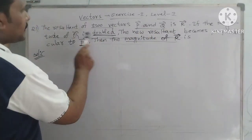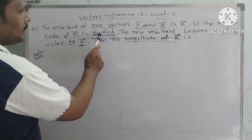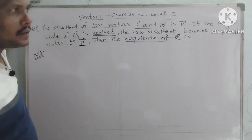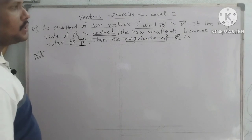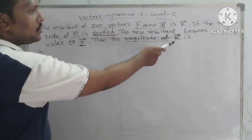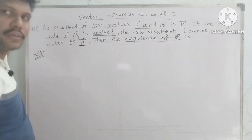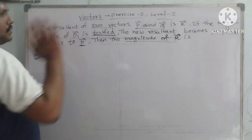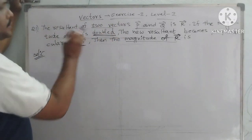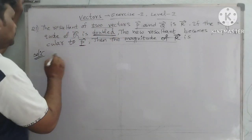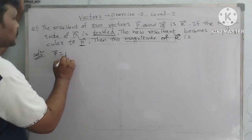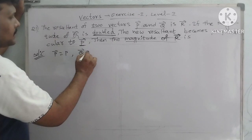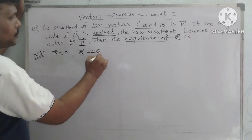So if Q vector is doubled, then the new resultant is perpendicular to P vector. At the same time, the new resultant magnitude is what we need to find. Here, P vector equals P and Q vector equals 2Q.